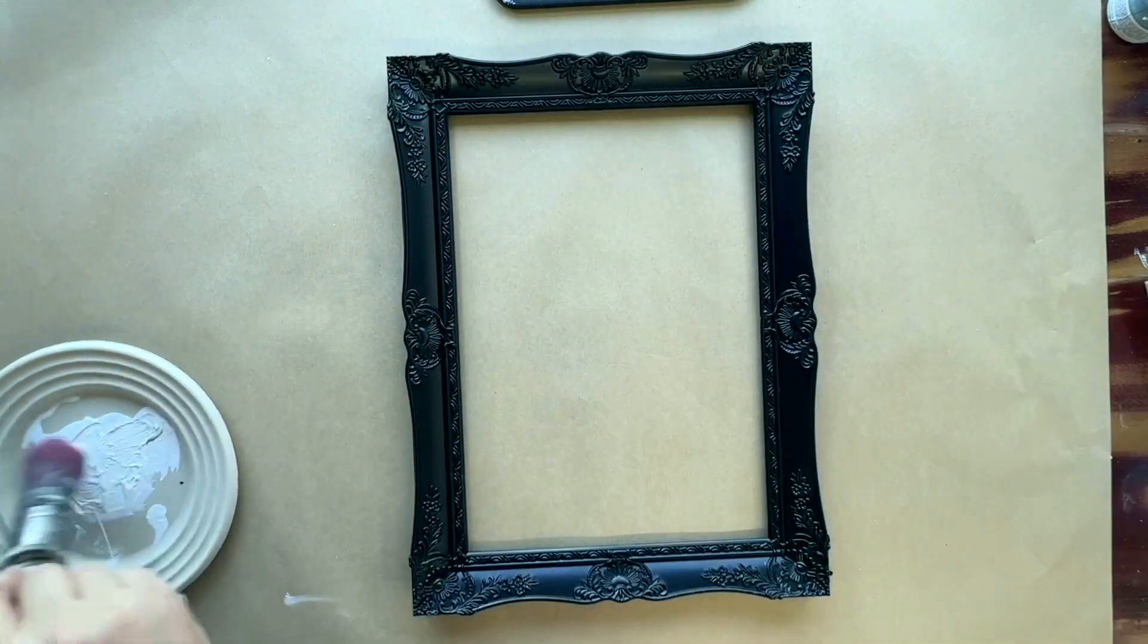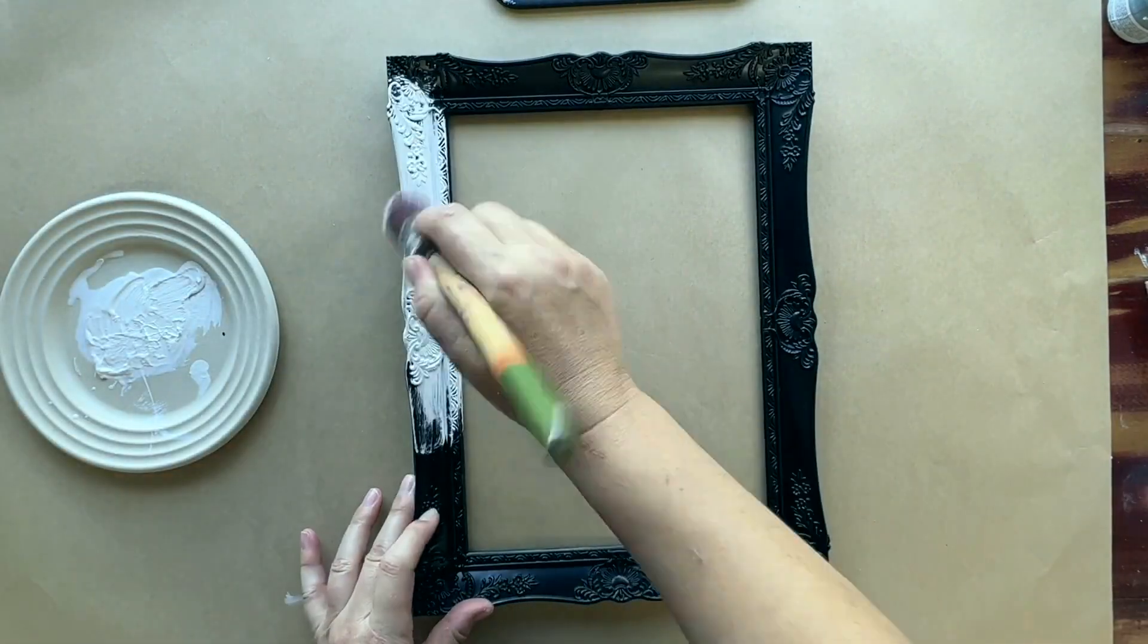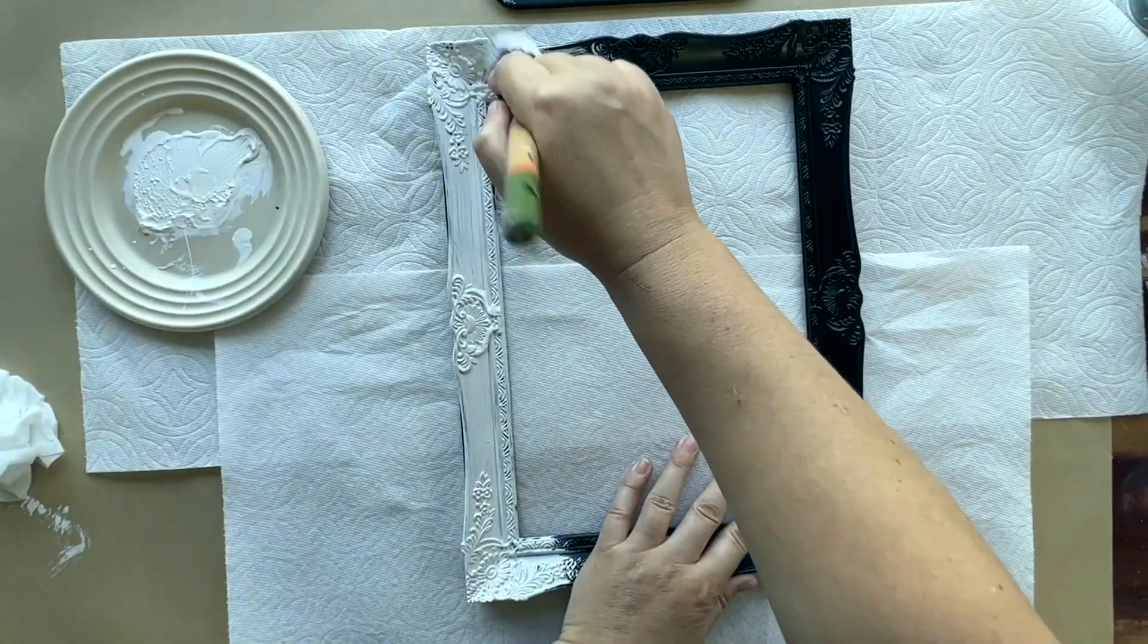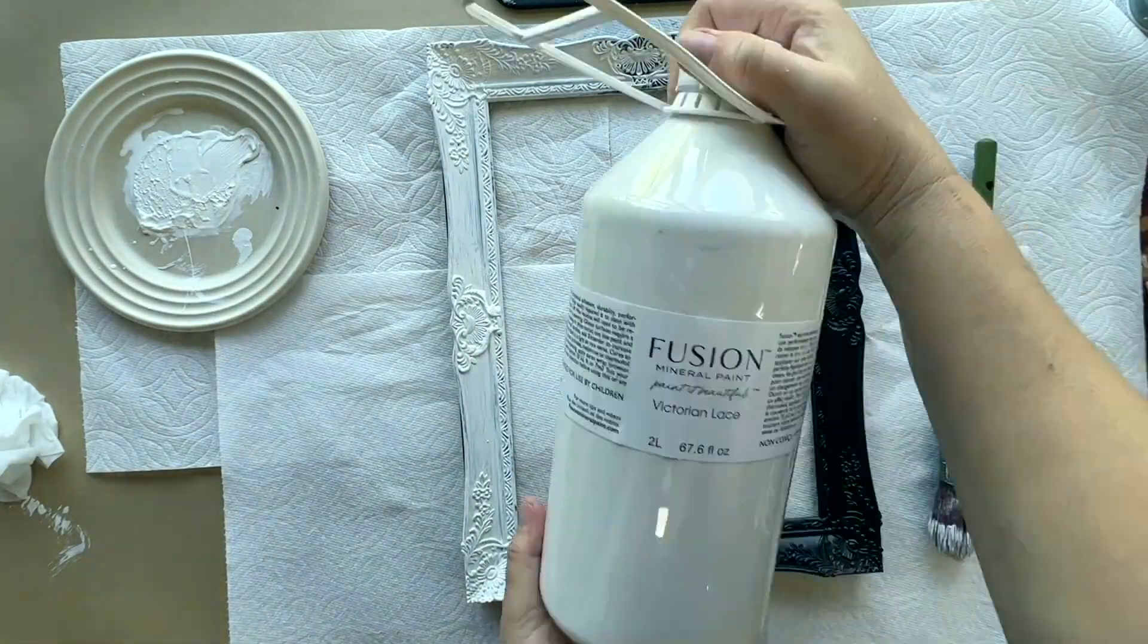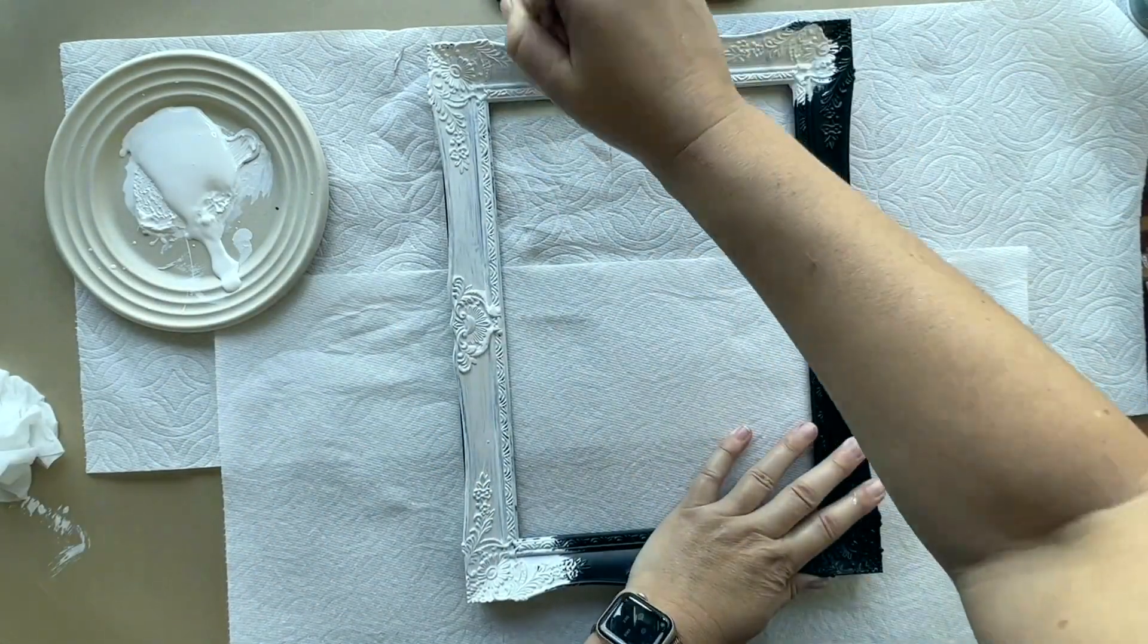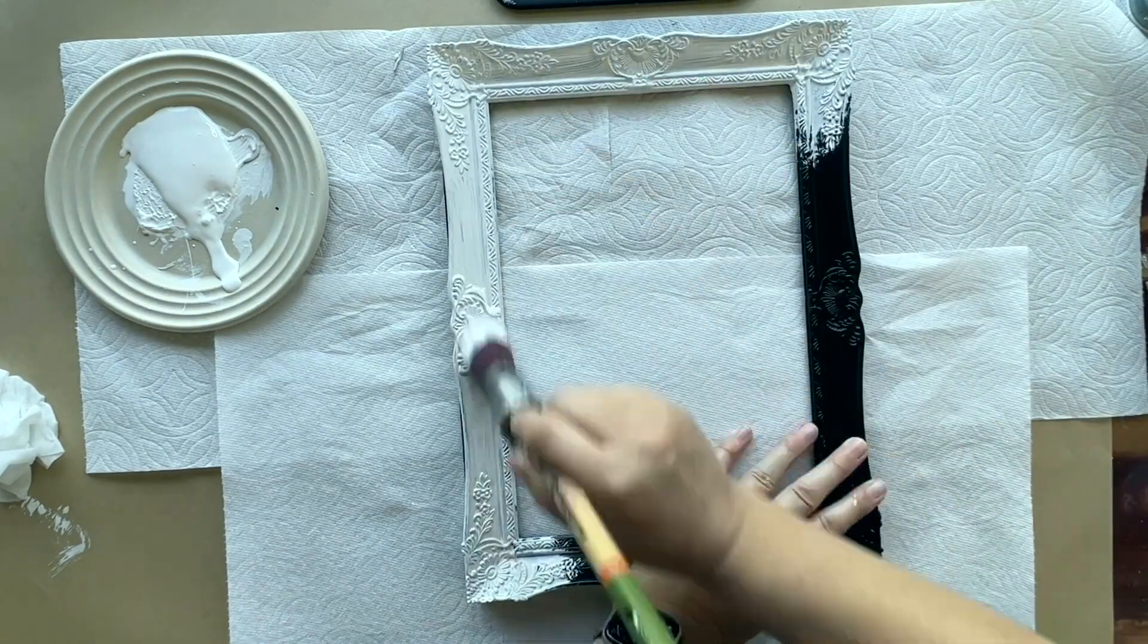I'm just removing the backing of the frame including the glass, and I will be painting the frame with Fusion Mineral Paint in the color Victorian Lace. When the first coat is dry, I will add another coat for full coverage.